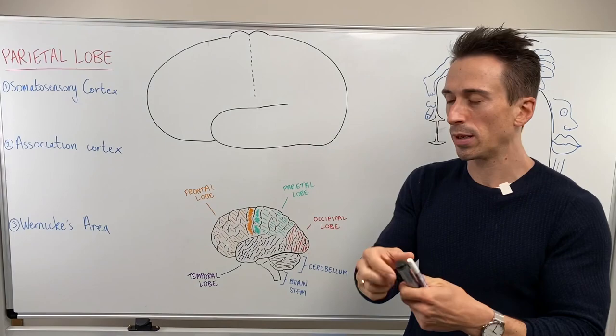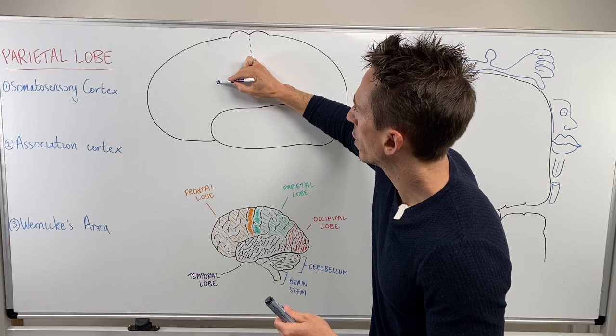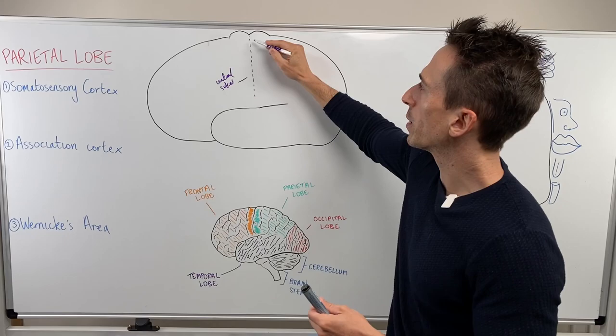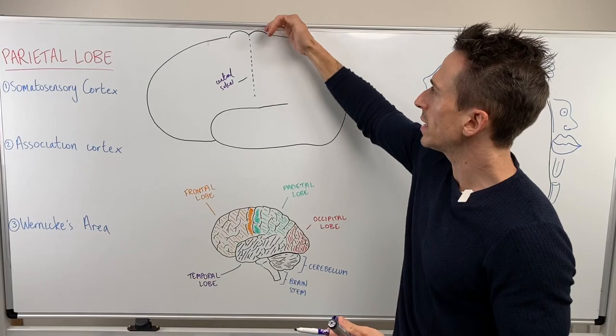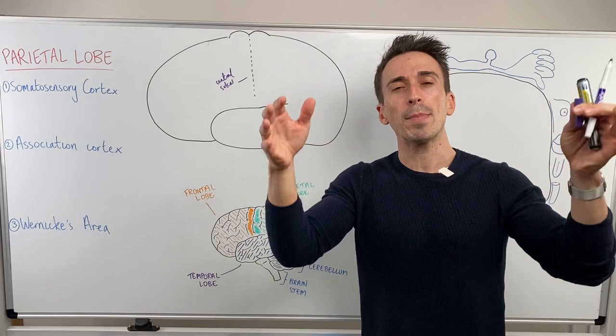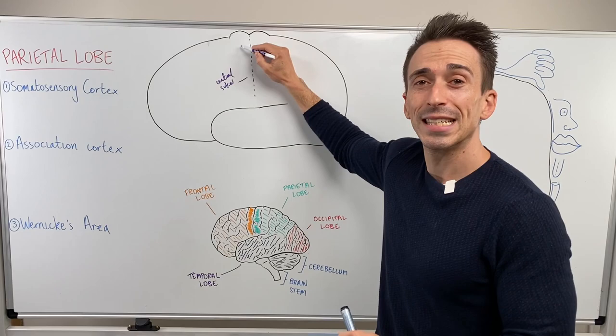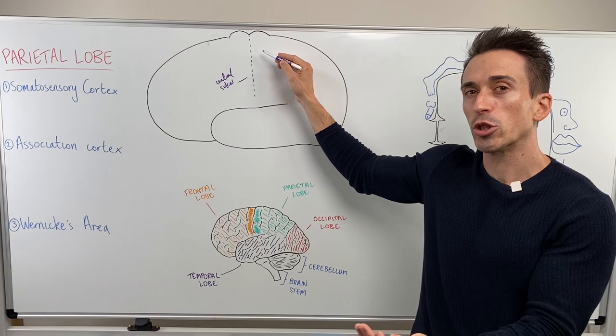First we need to talk about the anatomical margins you should be aware of. We have an area called the central sulcus — central because it's right in the middle, sulcus because it's a dip down. When there's a dip down, either side you're going to have a bump up. A dip down is a sulcus; a bump up is called a gyrus. With the frontal lobe we have the pre-central gyrus, and therefore for the parietal lobe it's called the post-central gyrus.